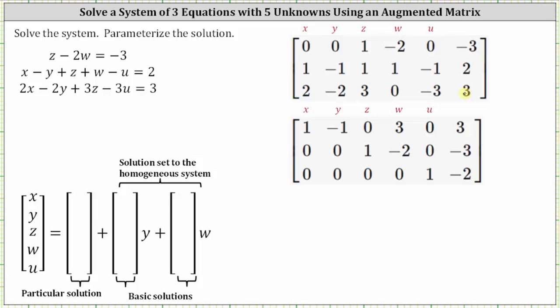Next, we write the augmented matrix in reduced row echelon form, which I've already done. Before we write the equations for each row, let's identify the pivots — these are the first non-zero entries in each row. We have a pivot in row one column one, row two column three, and row three column five. So the pivot columns are columns one, three, and five, meaning the basic variables are x, z, and u, and the free variables are y and w.